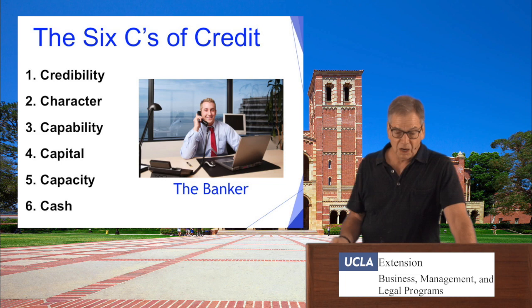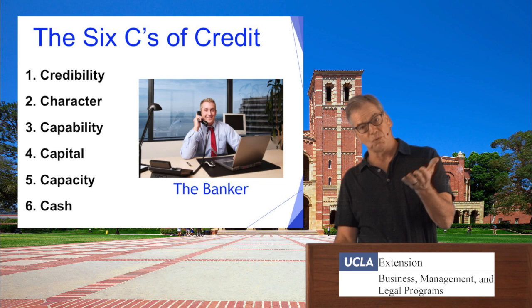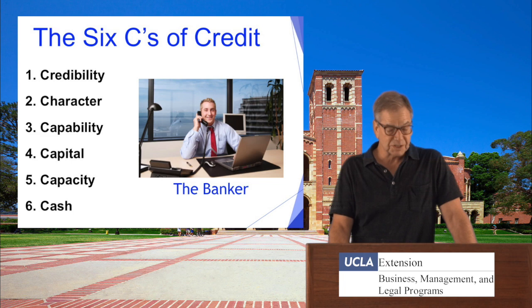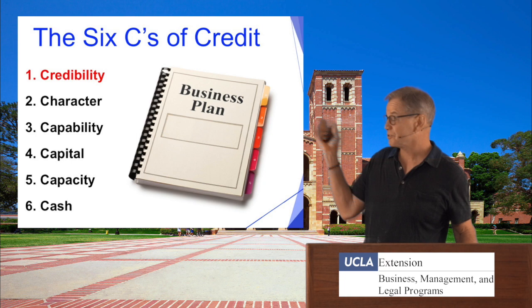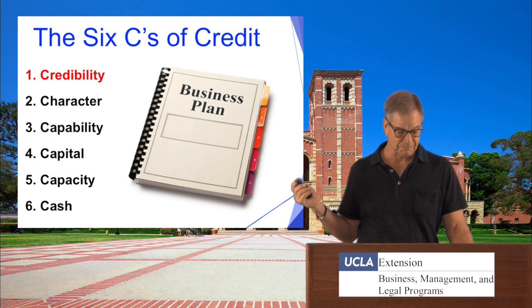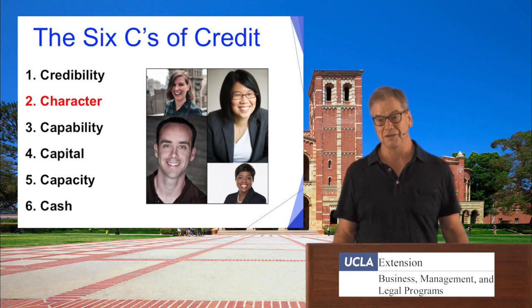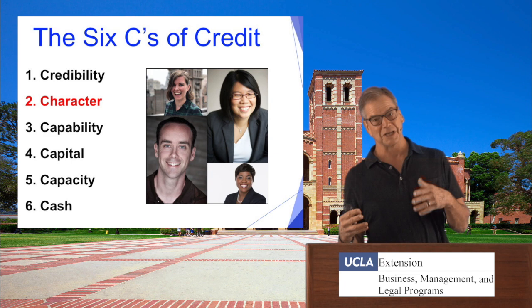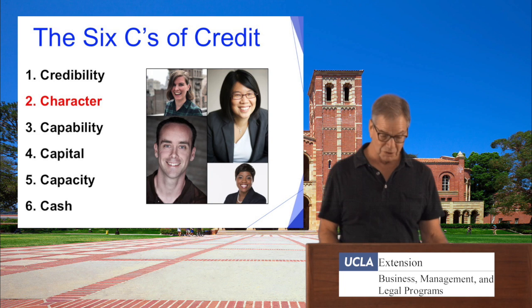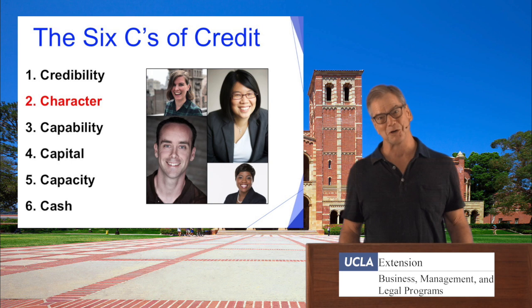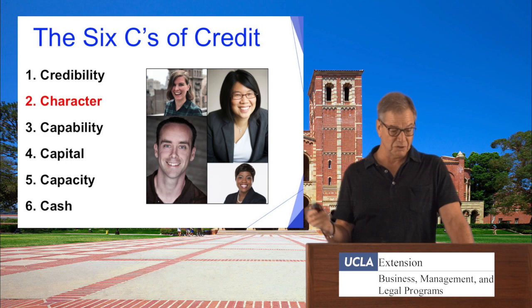When banks do lend, they use what's called the six C's of credit. The first is credibility: do you have a business plan? Are you organized? Have you done an industry analysis and market analysis? No business plan means you score pretty low on credibility. The second is character: do you have the demeanor, the professionalism, the psychological and personality type you'd expect to find in a successful entrepreneur? If they don't pick up on that, you'll score pretty low on character.